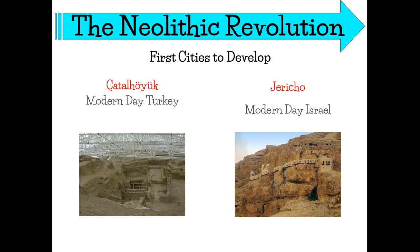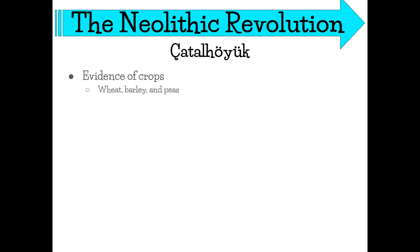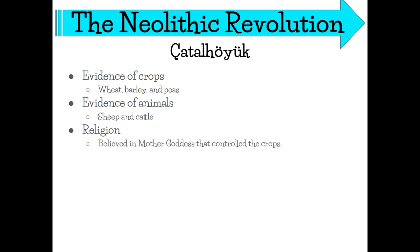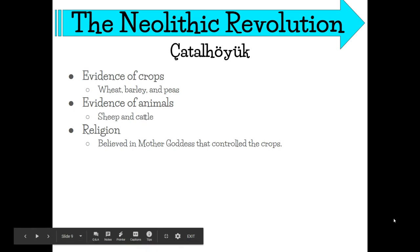The first two cities to develop were Çatalhöyük, now in modern-day Turkey, and Jericho, now in modern-day Israel. At Çatalhöyük, a discovery was made in the late 1950s by British archaeologist James Mellaart. He found art in homes, crops — wheat, barley, and peas — and animal remains including sheep and cattle. Their religion involved a belief in some sort of mother goddess who they believed controlled the crops.